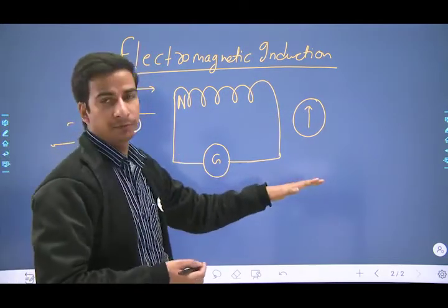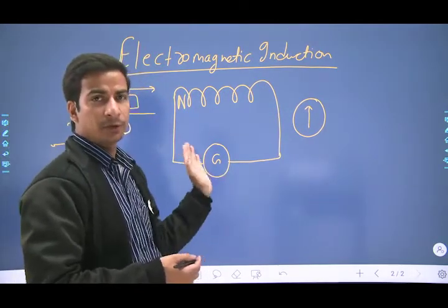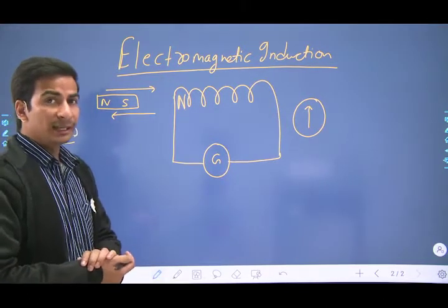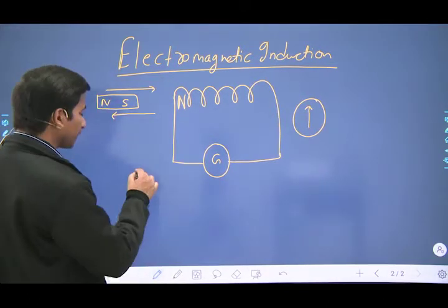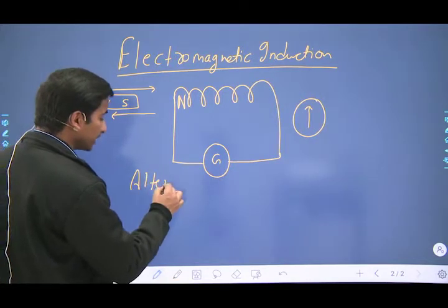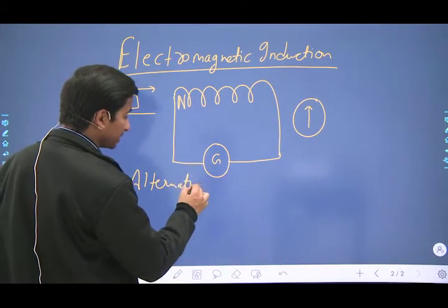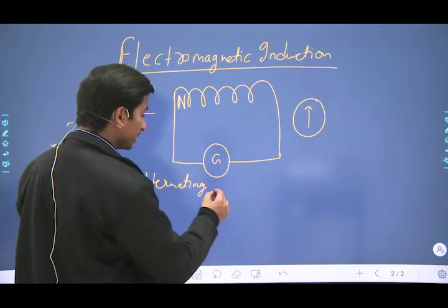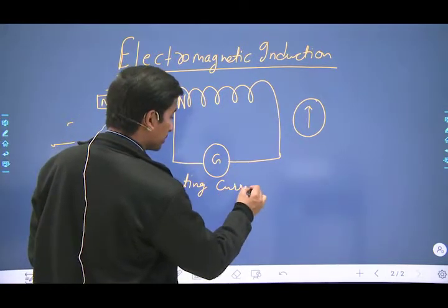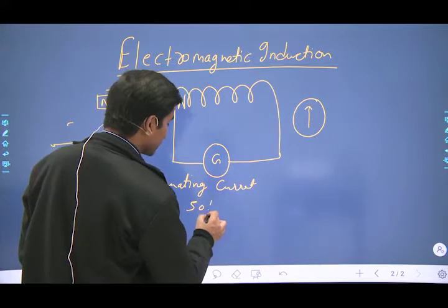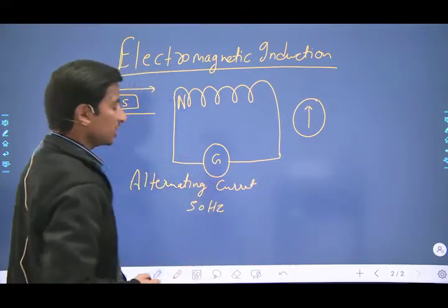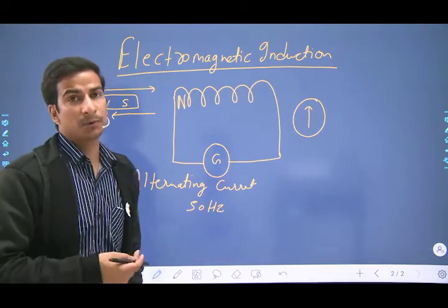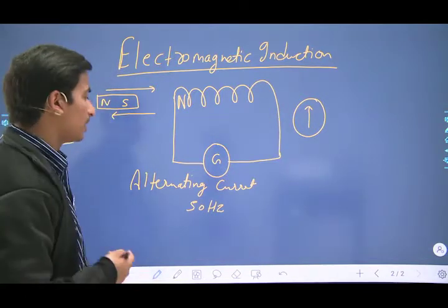Kabhi ye galvanometer right side ko deflect hoga, kabhi left ko deflect hoga — the direction of current is continuously changing and you are getting a special type of current known as alternating current. Humare gharon mein aane wali jitni bhi electricity hai, that is alternating current, and it has a frequency of 50 hertz. It means the current changes its direction 50 times in a second — 50 times positive and 50 times negative.